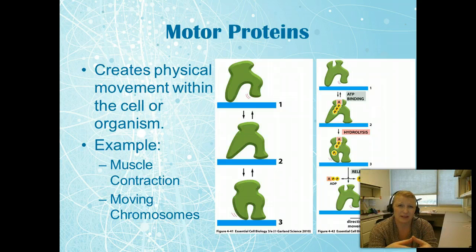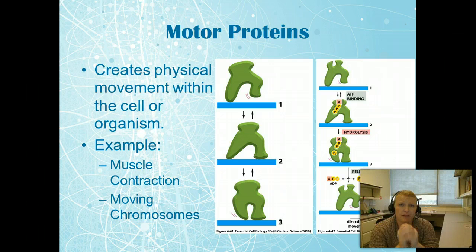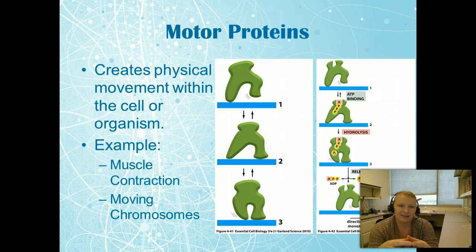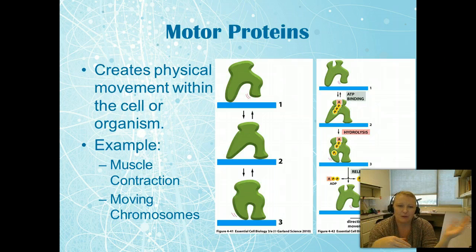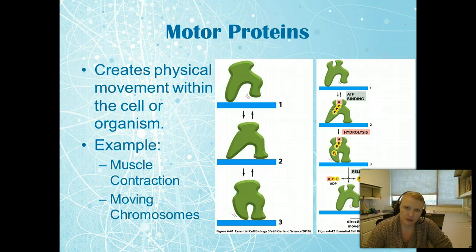Motor proteins are really important in the cell — they move molecules needed for respiration, move other proteins and building blocks, move chromosomes during cell division, and drive muscle contraction. Directionality is ensured through conformational shifts: as ATP binds and the phosphate group comes off, it moves the back leg forward, causing the protein to take a step forward. Conformational shifts can only go in one direction, so the motor can't move backward.